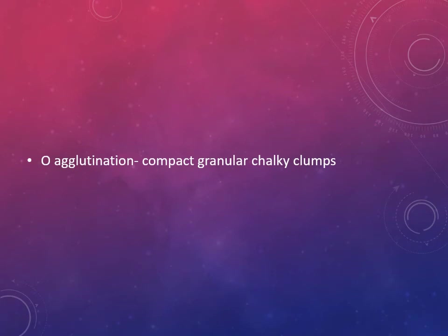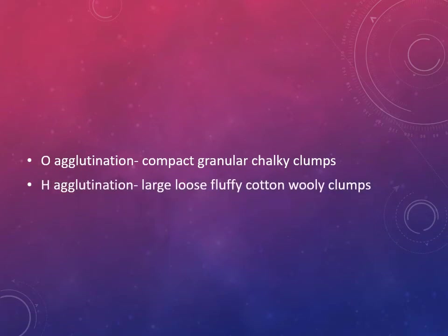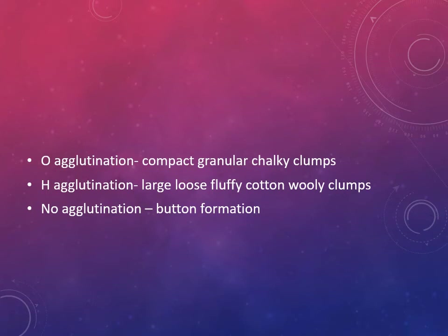If the patient serum contains the antibody and you have added the antigen, there will be an agglutination reaction. For O antigen agglutination, a positive result gives granular chalky clumps - like chalk deposits. For H agglutination, there will be large loose fluffy cotton-woolly clumps. We check up to how much dilution we are getting positive results. If there is no reaction, all antigen settles down at the center of the test tube forming a button.